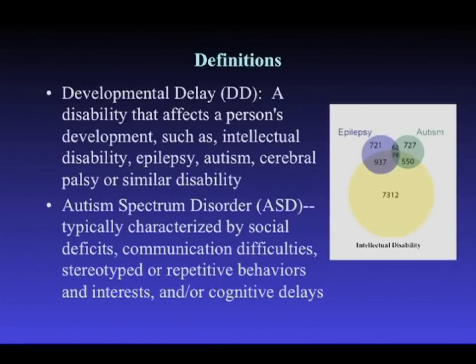Developmental delay is considered a very umbrella term, which essentially means that kids aren't meeting milestones in a whole number of different areas. The most noticeable within the clinical realm is intellectual disability and milestones with respect to speech and others. This also includes things like epilepsy, autism, cerebral palsy, and other disabilities.